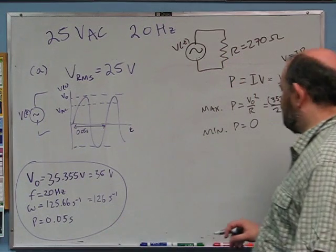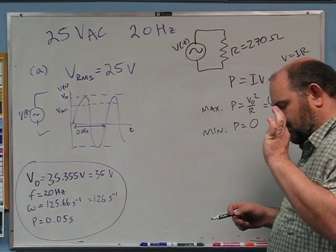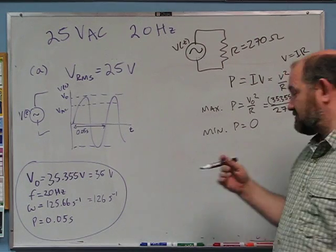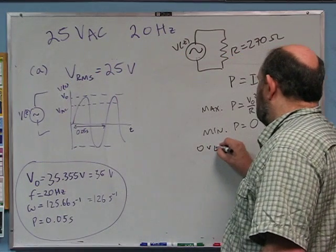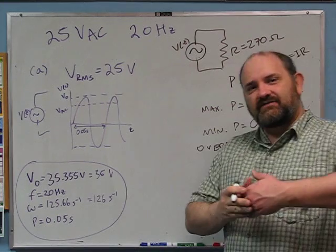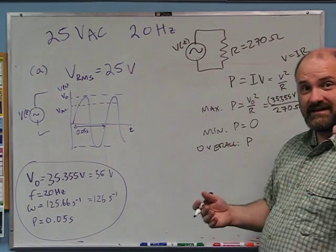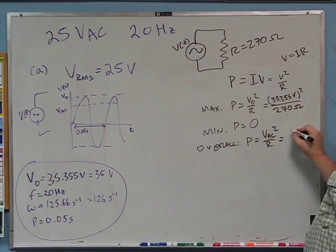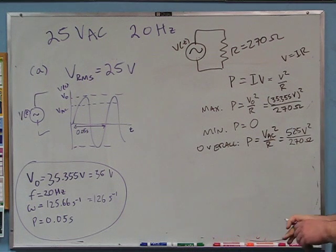It's instantaneous — you might think AC light bulbs are never off, and they aren't. But the power going into the resistor goes to zero 60 times a second; the filament just doesn't cool off fast enough to show it. The average power is V_RMS squared over R, which is 25 squared over 270 — that's 625 divided by 270, which is about 2.3 watts.